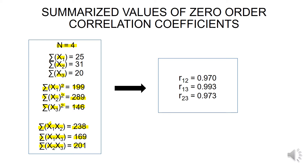We used the values achieved up till now for calculation of zero-order correlation coefficients. The zero-order correlation coefficient between variable 1 and variable 2 is 0.970, between variable 1 and variable 3 is 0.993, and between variable 2 and variable 3 is 0.973.